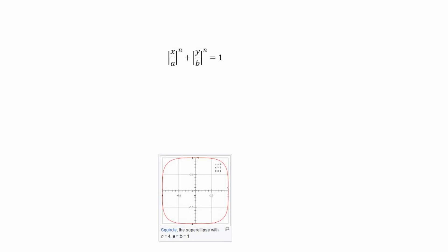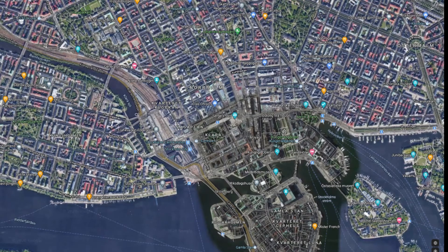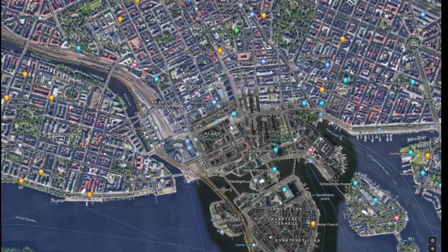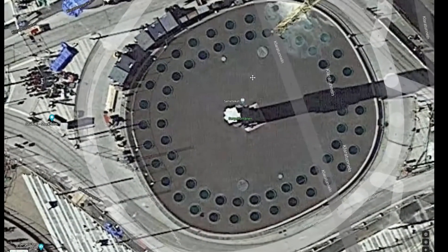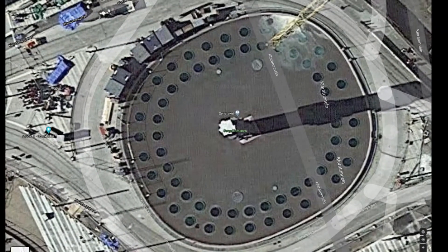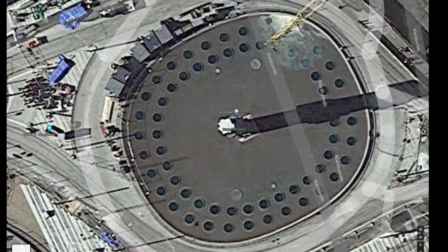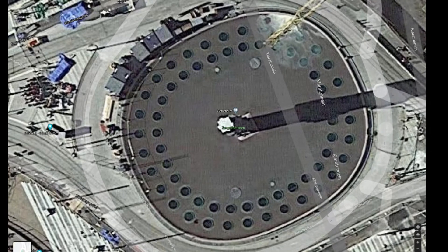A really brief diversion. In Sergels Torg, in Stockholm, the city planners needed a shape. A square would be too square, a round square too round. The mathematician Piet Hein devised the super ellipse, or Lamé curve, with exponent 2.5. Here it is in Google Maps.